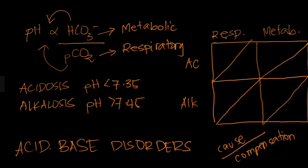Let's go to the top left quadrant — respiratory acidosis. This is acidosis, so the pH is decreased. This is respiratory, so the cause would be a shift in the carbon dioxide level. For the pH to decrease or become acidotic, CO2 has to increase. Remember, pH and CO2 are inversely proportional.